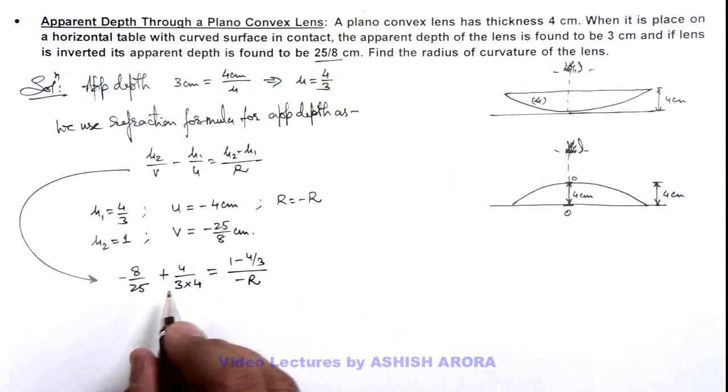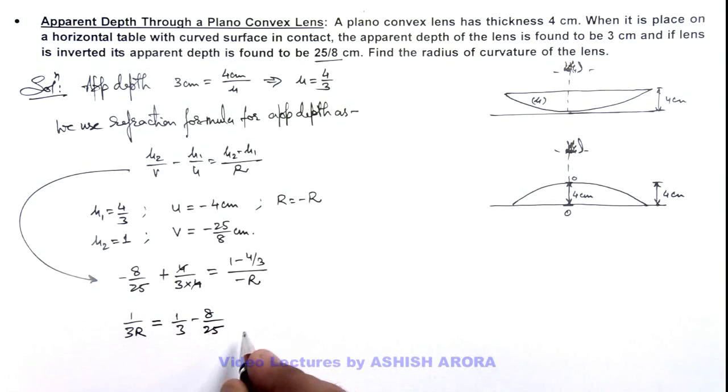If we simplify this, it will give us 1/(3R) equals 1/3 minus 8/25. Further, if we take the LCM to be 75, this will give us (25 - 24)/75, which is 1/75.